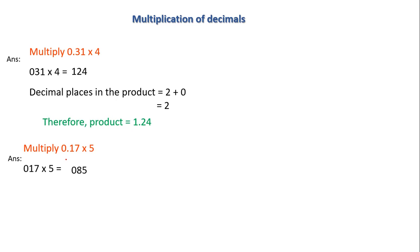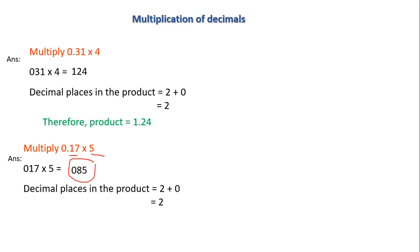Now I find the number of decimal places in the product. In the first number there are two decimal places; in the second number it is 0. So decimal places in the product equals 2 plus 0, which is 2. Converting 085 to two decimal places gives the product of 0.17 into 5 as 0.85.